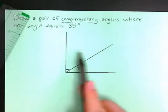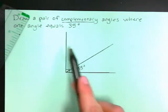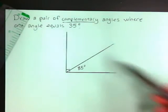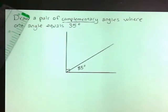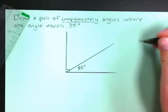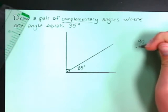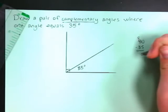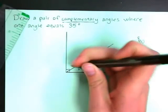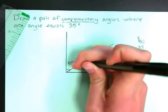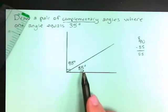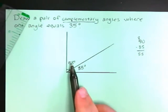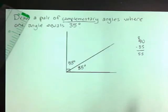And since I know this whole angle right here is 90 degrees, I can use that information to help me figure out what this other angle is right here. And so I know that 90 minus 35 is going to equal 55. So this angle over here must be 55, because 35 plus 55 equals 90.